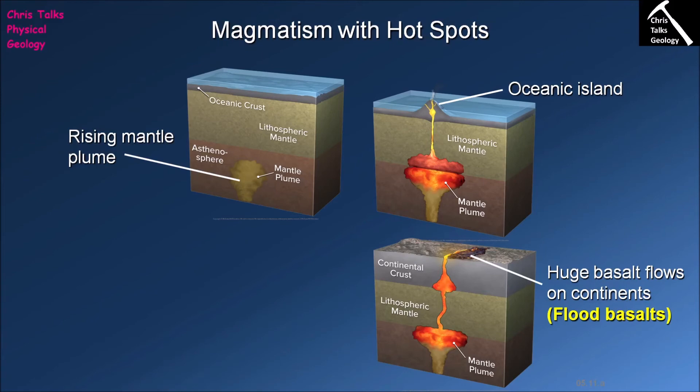The magma pours out onto the surface in huge quantities, and this is referred to as a flood basalt eruption. Flood basalt eruptions are when huge volumes of mafic lava get erupted onto the surface of the Earth. A classic example would be the Deccan Traps of India — a flood basalt area roughly a quarter of the size of the country of India, a very large area covered by these flood basalts, and these flood basalts are related to mantle plumes.